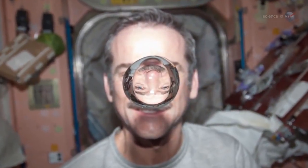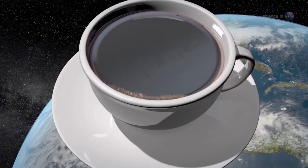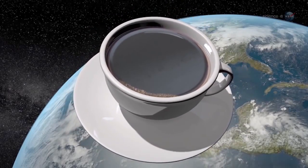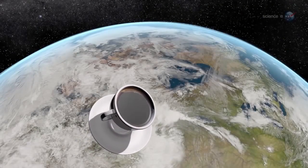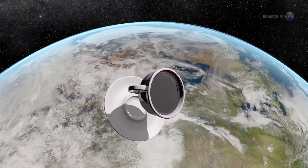For starters, he says, it would be a chore just getting the coffee into the cup. Absent the pull of gravity, pouring liquids can be very tricky. But for the sake of argument, let's suppose you are on the space station and you have a cup of coffee in your hand. The most natural thing would be to tip the cup towards your lips.